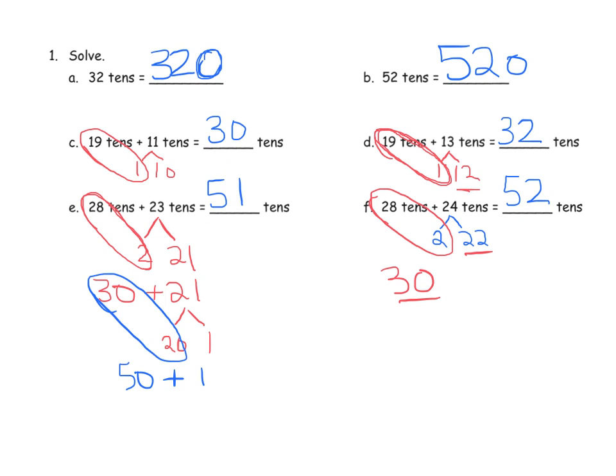Now, keep in mind in these last ones here, this is 51 tens. Now, what is 51 tens? 51 tens is really 510. And what's 52 tens? That's really 520. All right.